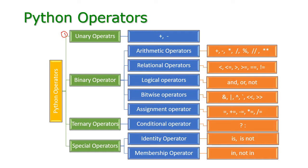The first one is unary operator, second one is binary operator, third one is ternary operator, and the last one is special operators. Unary operator means that will perform on a single operand. Here in unary operator we are having two operators: unary plus and unary minus. Only two operators are there.